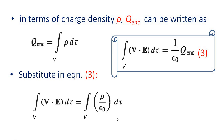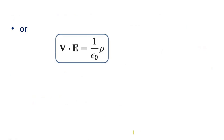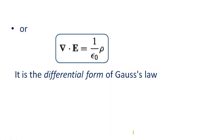Now, comparing the left-hand side and right-hand side of this equation, we obtain: divergence of E equals rho over epsilon-zero. This is the differential form of Gauss's law.